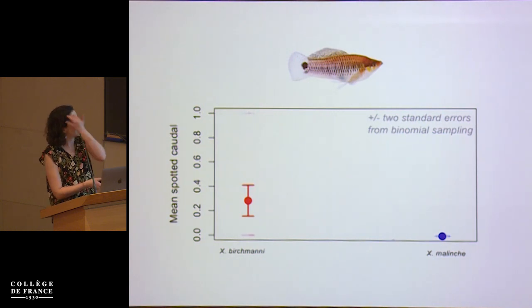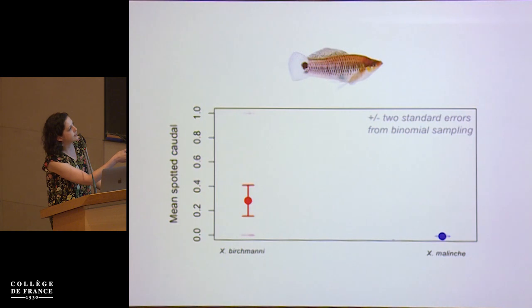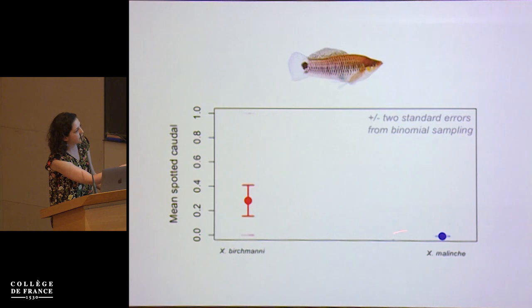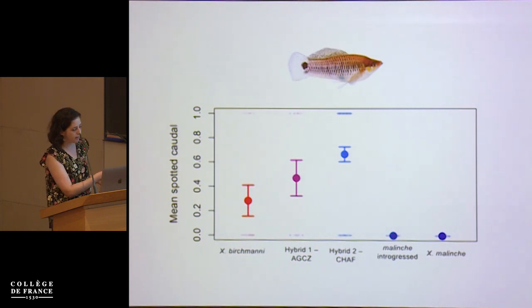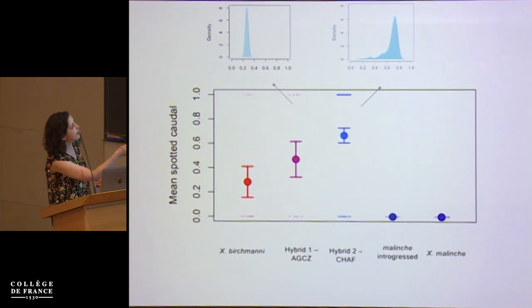Today I'm going to tell you about work that's a deviation from these genome-wide signals and really focuses on a single hybrid incompatibility in detail. To tell you about this, I need to start with a trait called the spotted caudal — a collection of macromelanocytes that form on the caudal fin of birchmanii. It's at intermediate frequencies in birchmanii, it's completely absent in malinche, and we noticed something interesting as we began to look in hybrid populations: the incidence of this trait was very high, especially given what we knew about the mixture proportions of those populations.